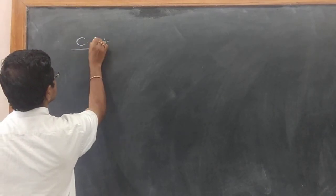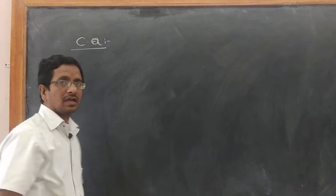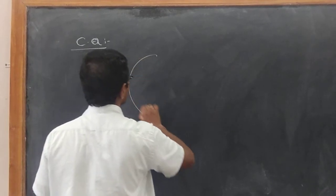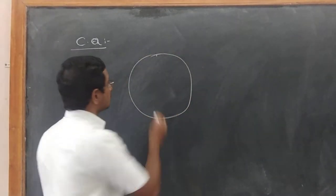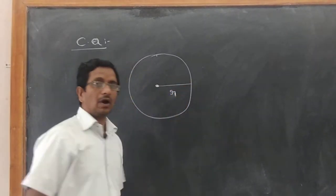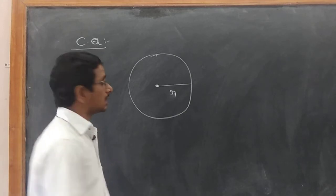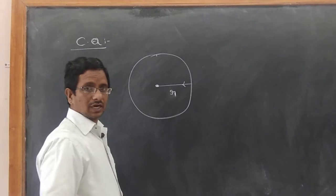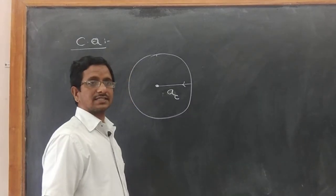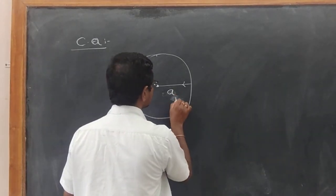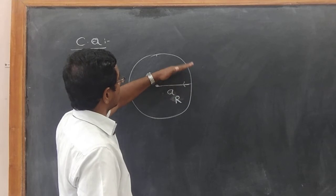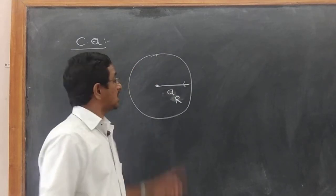Centripetal acceleration. Take a circle. It is the center. It is the radius. Centripetal acceleration always acts towards the center — that means A_C, toward the center. Or A_R, because it is along the radius. We are acting along the radius.